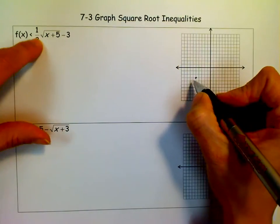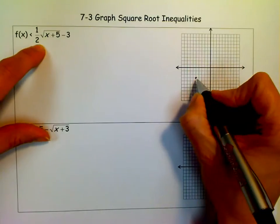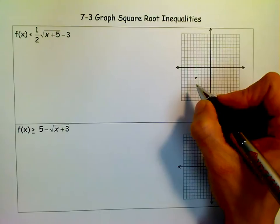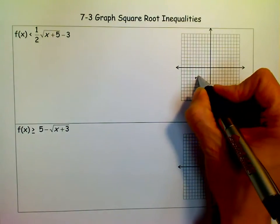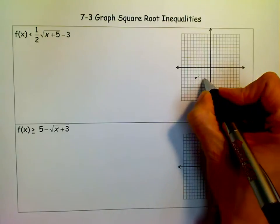I know I haven't reflected over the x-axis, so I know it's going to go like this. But this one half, what that does is it cuts in half how I would go up. So instead of going over one and up one, I'm going to go over one, up a half.